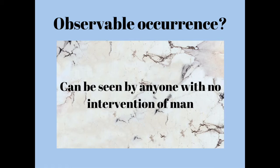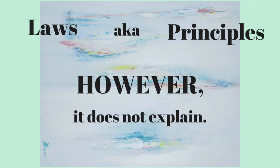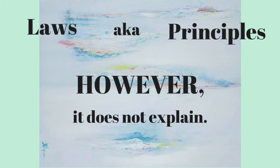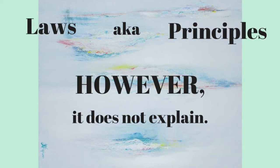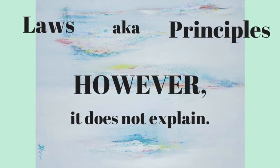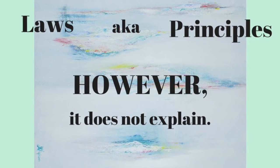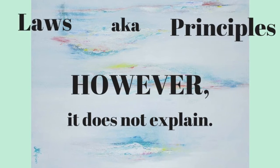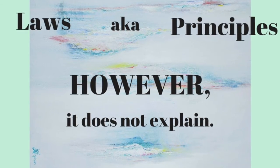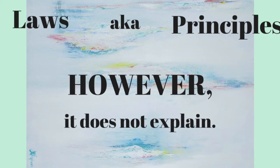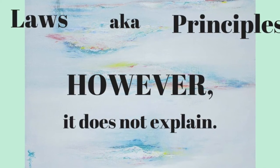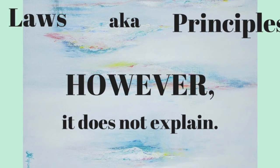But what is an observable occurrence? It's something that can be seen by anyone and happens with no intervention by man. In science, sometimes a law is called a principle. The law or principle may describe only the occurrence, or it may describe the occurrence and predict it as well. However, a law does not make explanations about natural occurrence.